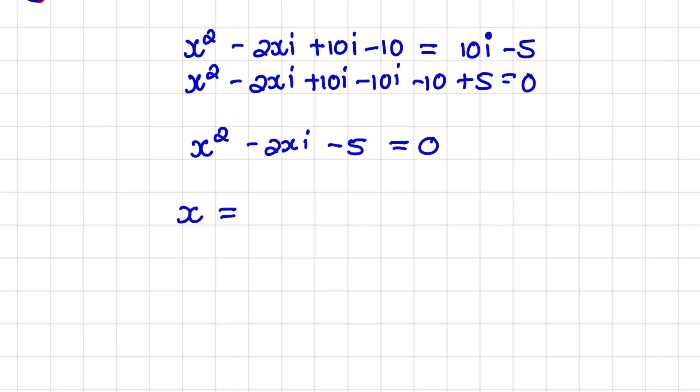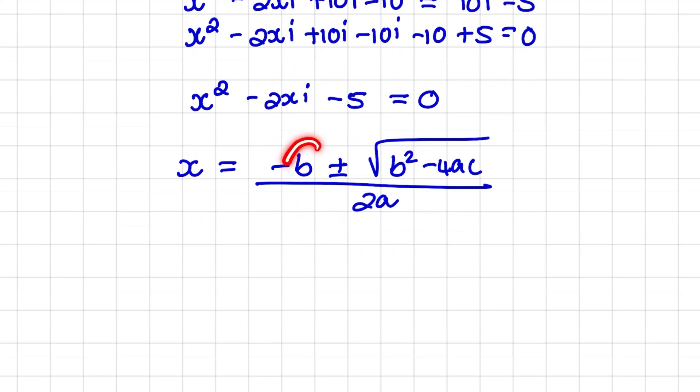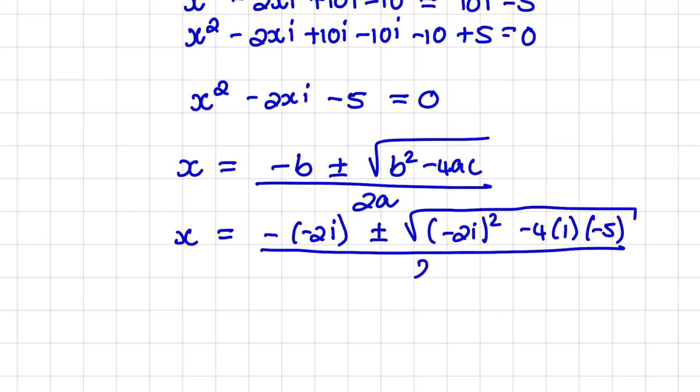So that is, x is equal to minus b plus minus the square root of b squared minus 4ac over 2a. We need to be careful because the b value is not only negative 2, but it is actually negative 2i. So when I substitute the values of b, I have minus negative 2i plus minus negative 2i squared minus 4. The a value is 1 and the c value is minus 5.